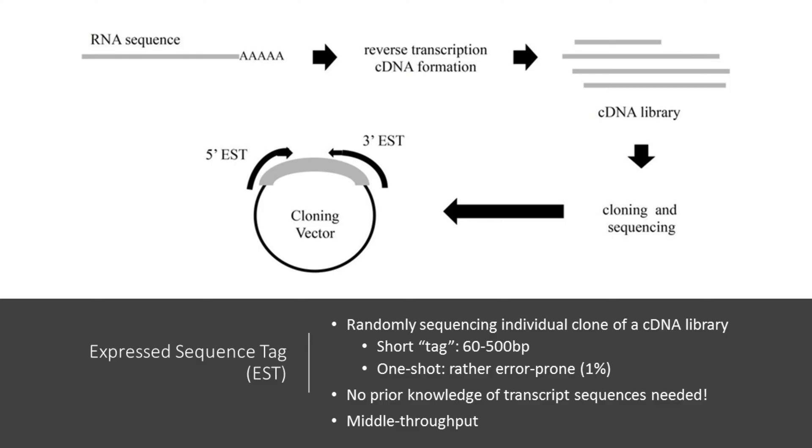Expressed sequence tag, or EST, can get part of the sequence of a randomly chosen cDNA segment by cloning and sequencing once. As based on sequencing, EST differs from microarray in its capability of sequencing the transcript without knowing its sequence in advance.